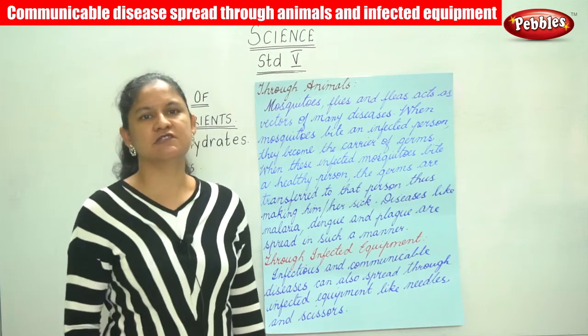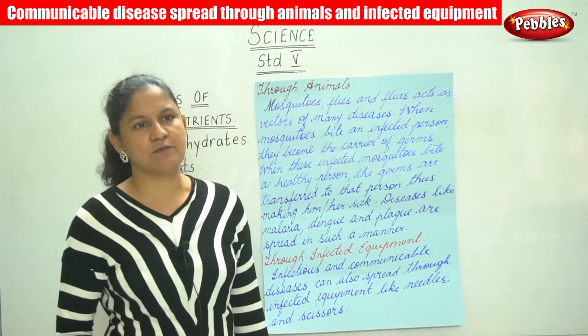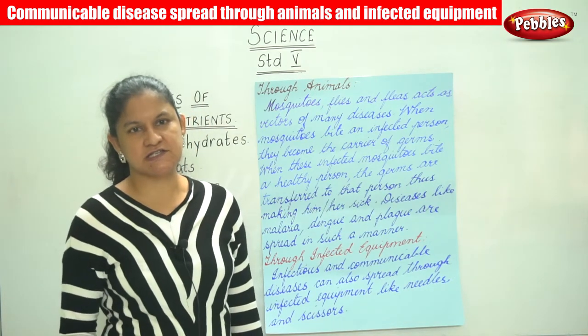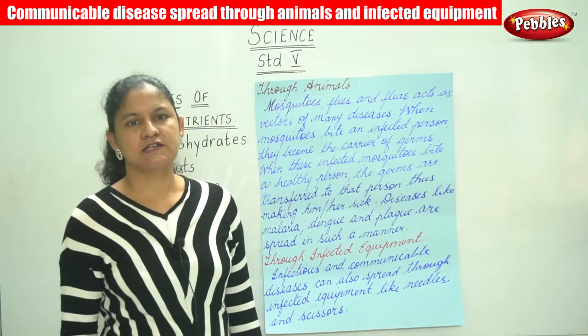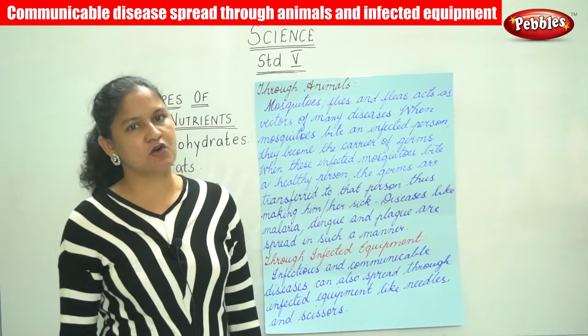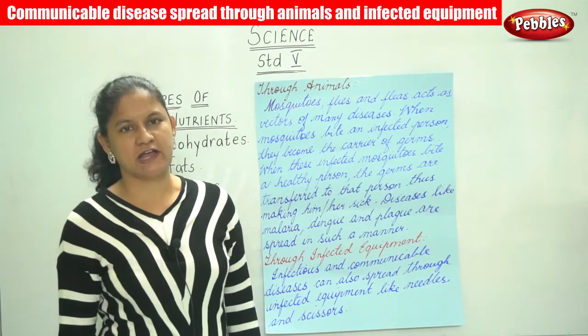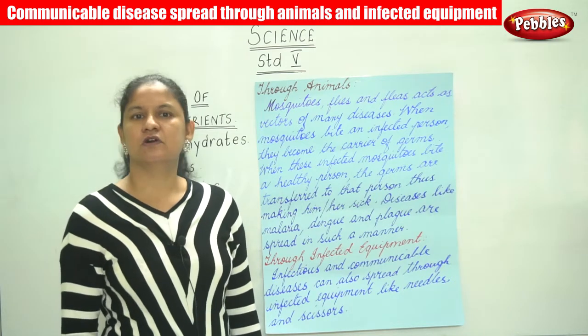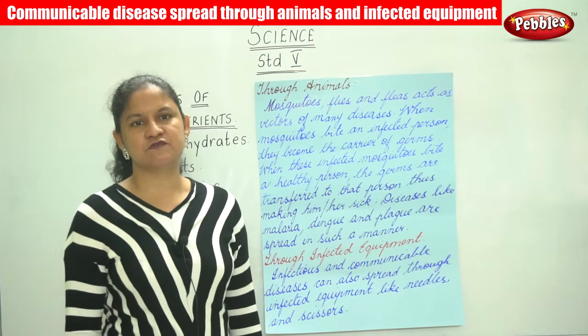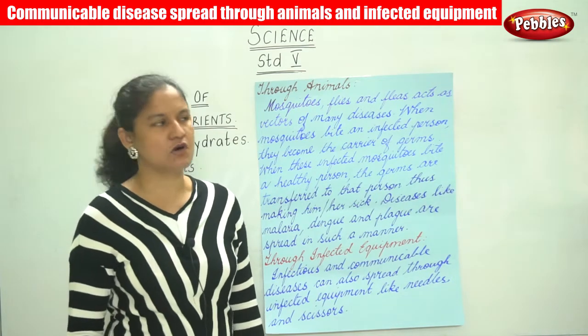We are talking about the spread of communicable diseases — through direct contact or air, and through contaminated food or water.